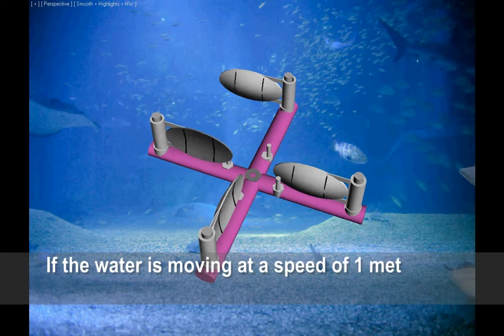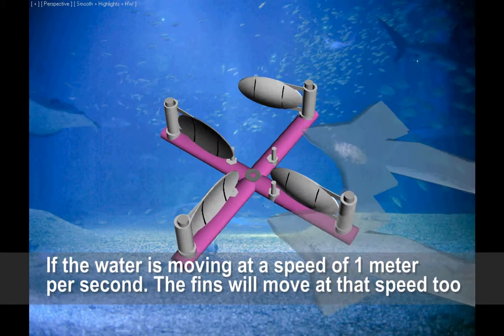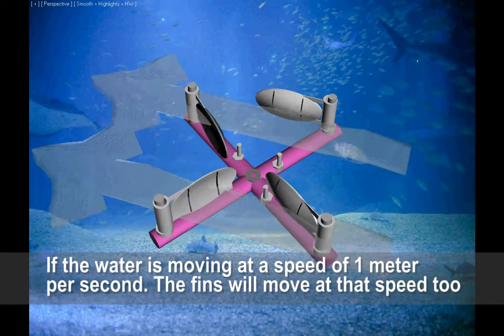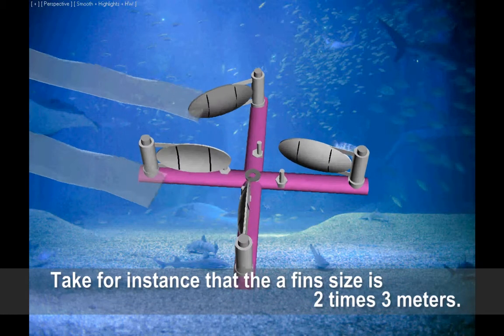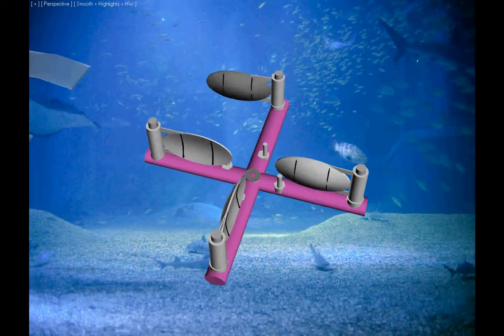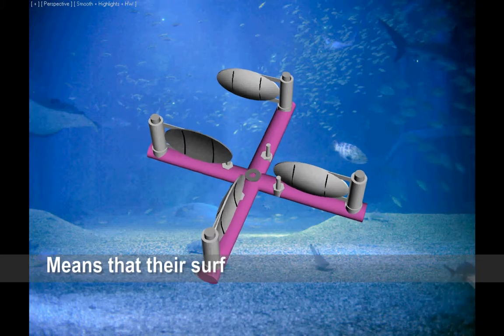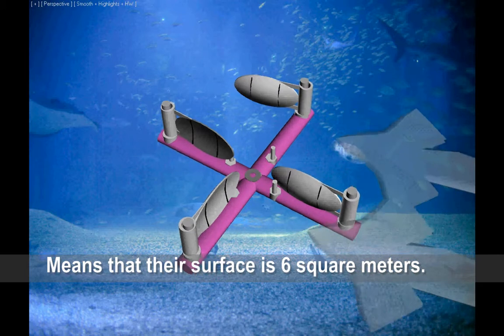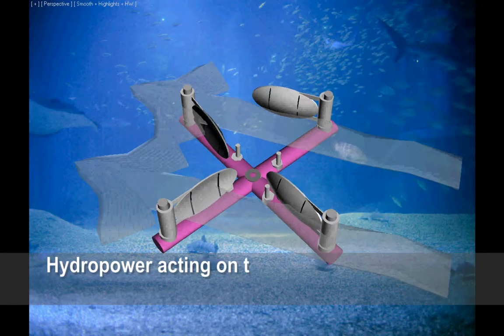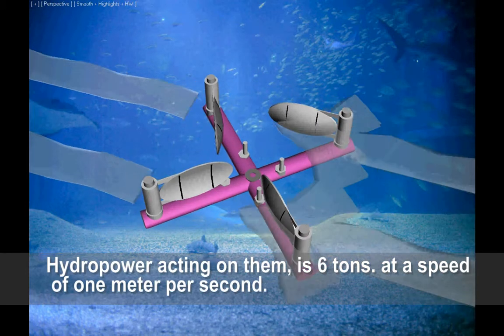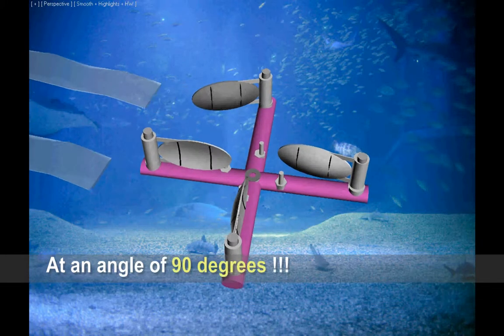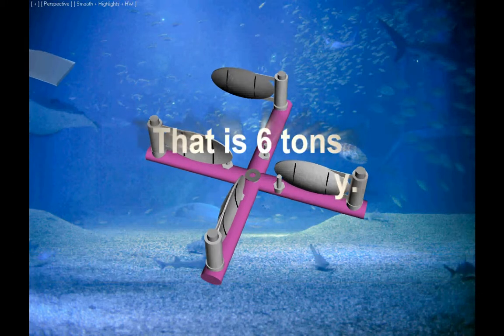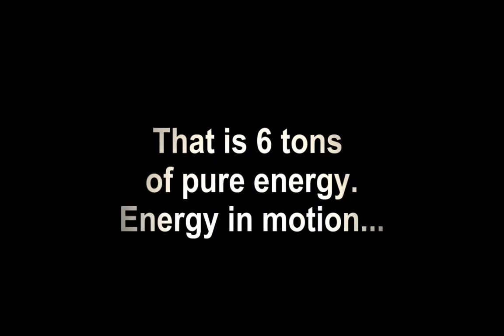If the water is moving at a speed of 1 meter per second, the fins will move at that speed too. Take for instance that the size of fins is 2 times 3 meters. Means that their surface is 6 square meters. Hydropower acting on them is 6 tons at a speed of 1 meter per second. At an angle of 90 degrees, that is 6 tons of pure energy. Energy in motion.